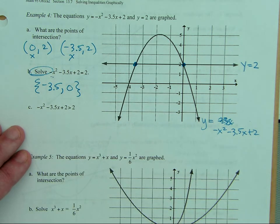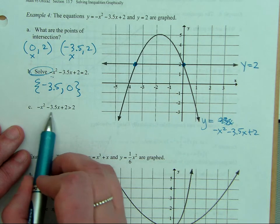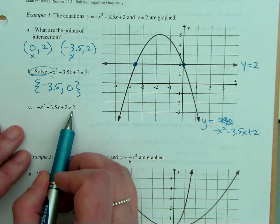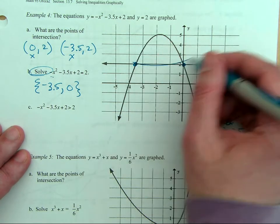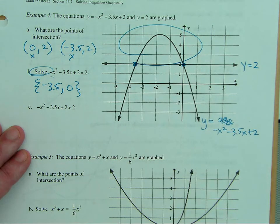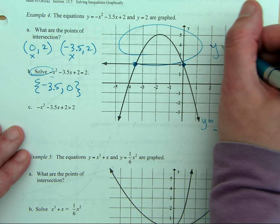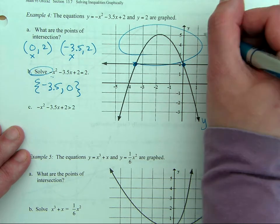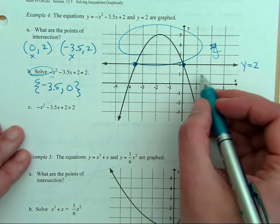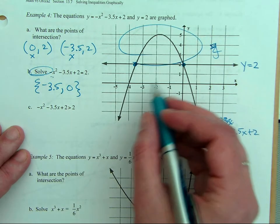But those are the two different things we can do. Now, if we want to know when is this greater than 2, that's this whole area up top, right? So what's the interval where up here we're greater than 2? Where the parabola is greater than 2.